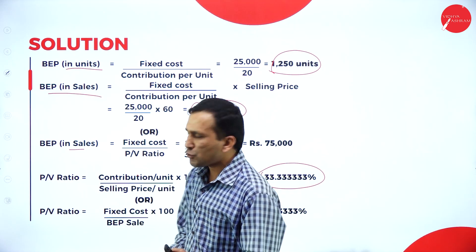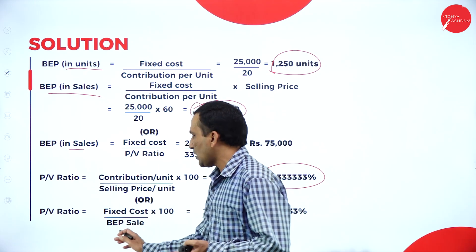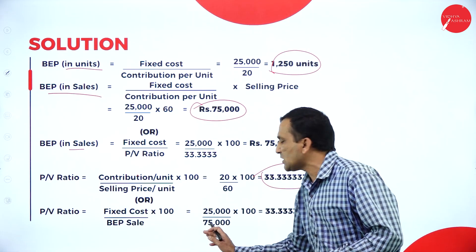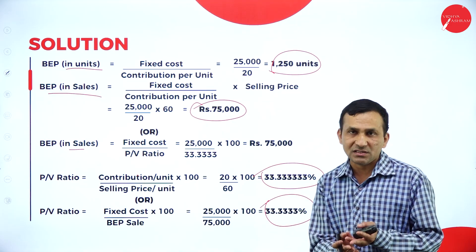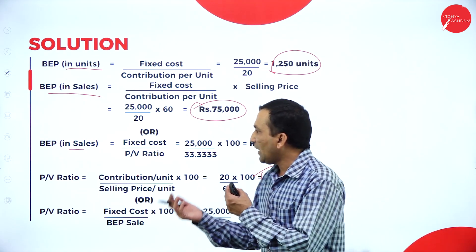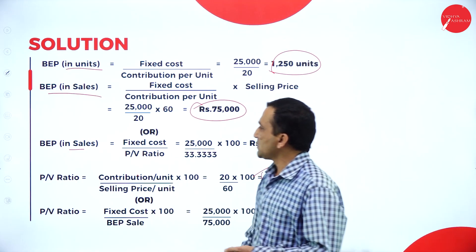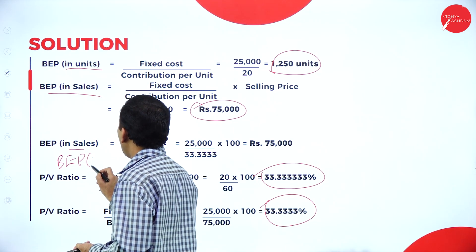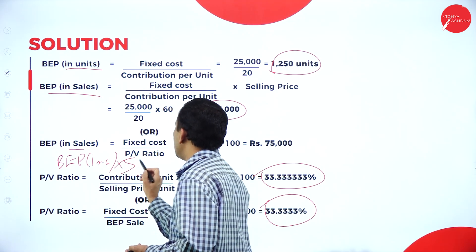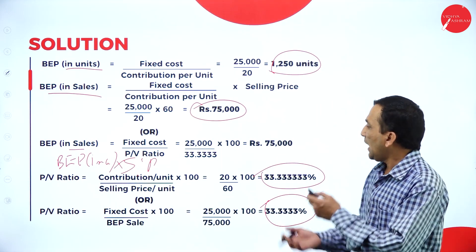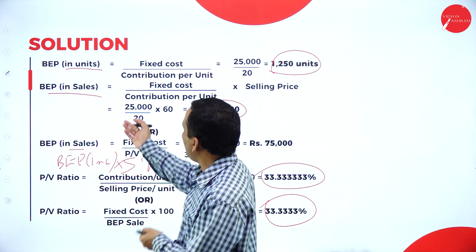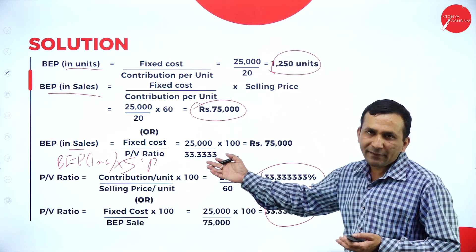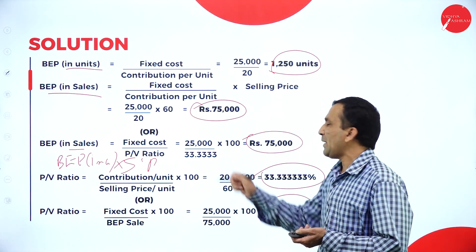One more formula to verify PV ratio: fixed cost divided by BEP in sales = 25,000 ÷ 75,000 × 100 = 33.33% — same answer. Also, breakeven sales = breakeven units × selling price = 1,250 × 60 = 75,000. And using PV ratio: fixed cost ÷ PV ratio = 25,000 ÷ 33.33% × 100 = 75,000 — all formulas confirm the same answer.